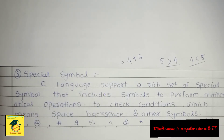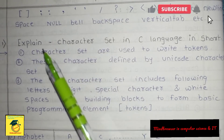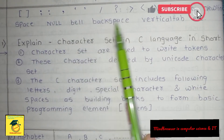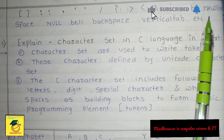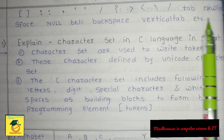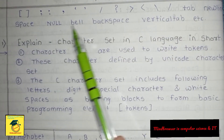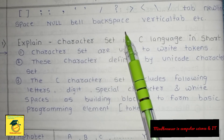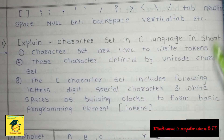These special symbols include hash, dollar, percentage. If you want to check a condition in a program — suppose five is greater than four, or four is less than five — these special symbols are used to perform such conditions and operations like four plus six. The symbols include brackets, exclamatory marks, question mark, forward slash, backslash, tab, new line, space, null, bell, backspace, vertical tab, etc.